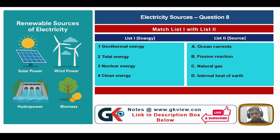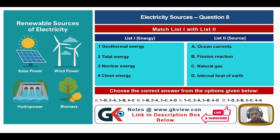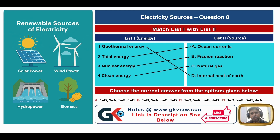Question number eight involves matching: geothermal energy, tidal energy, nuclear energy, and natural gas with their features. 'Geo' means earth and 'thermal' means heat, so geothermal matches with internal heat of the Earth. Tidal energy is generated by tides in ocean currents. Nuclear energy is based on fission reactions. Natural gas is comparatively clean relative to gasoline, petrol, and diesel. The matching is: 1-D, 2-A, 3-B, 4-C.